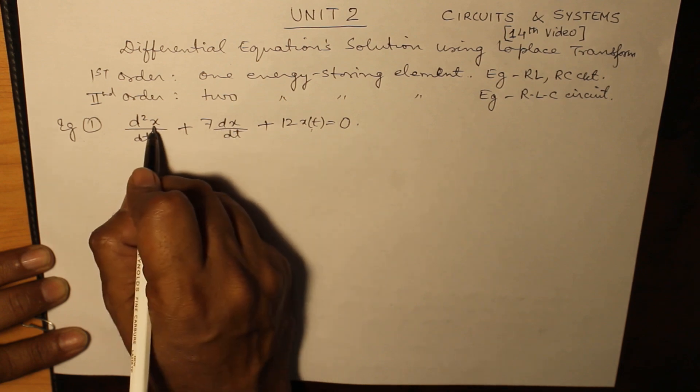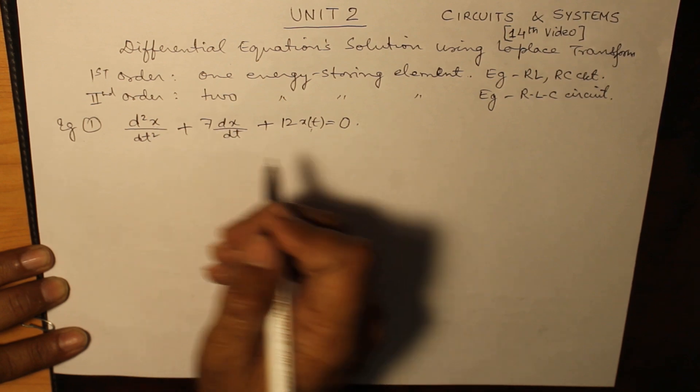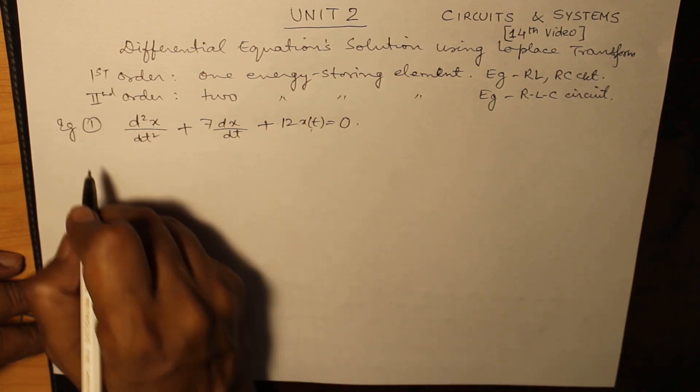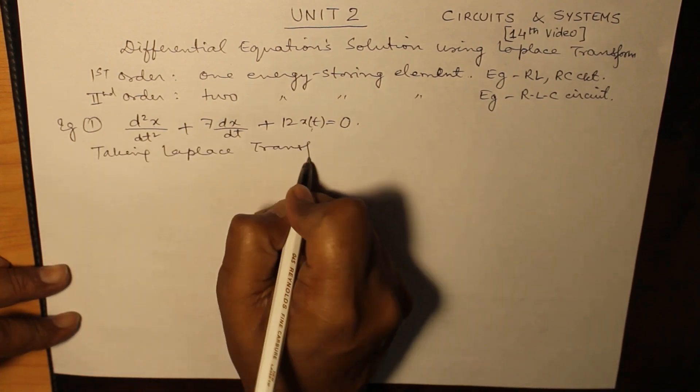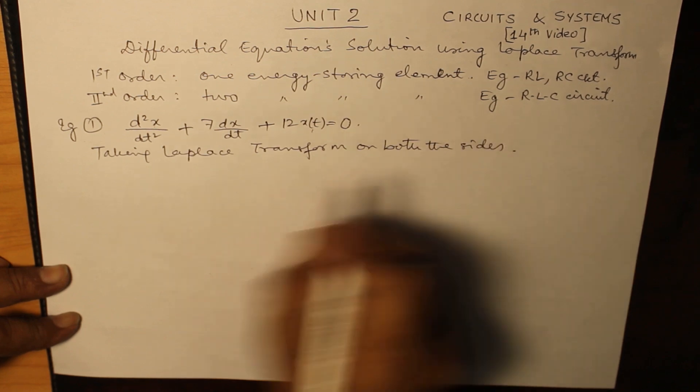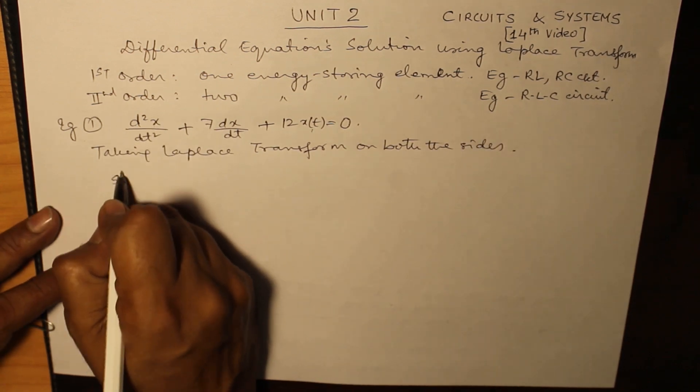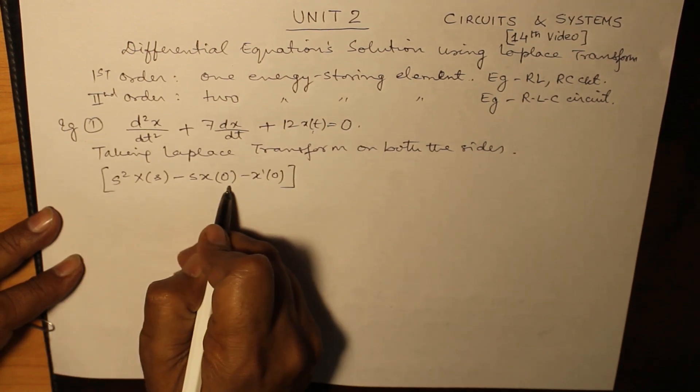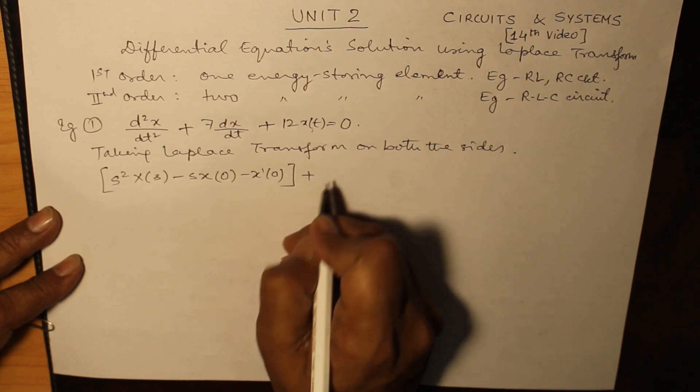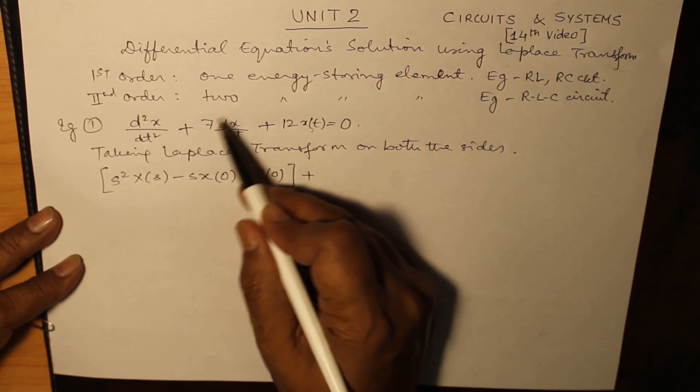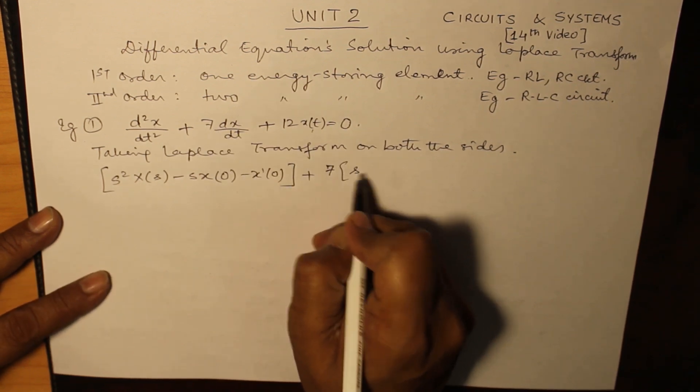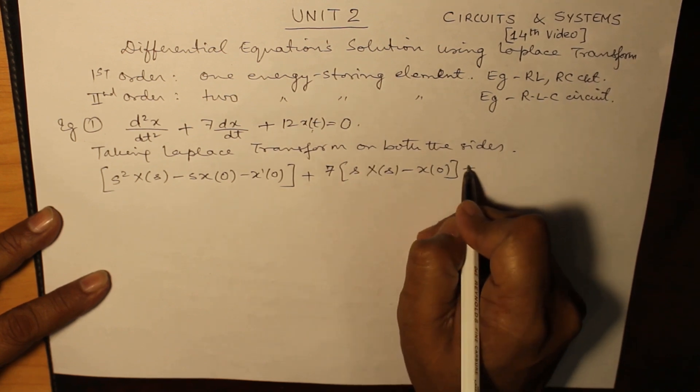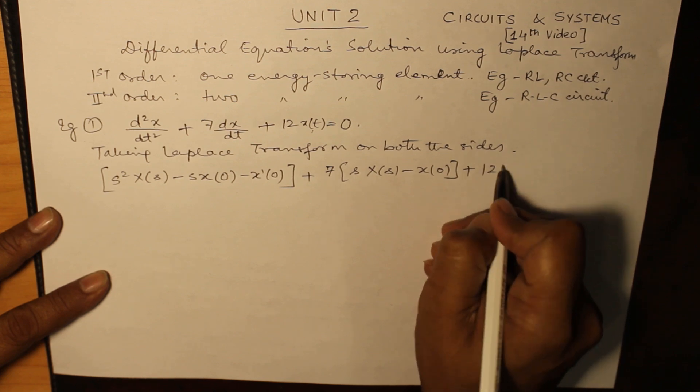The equation goes d²x/dt² + 7dx/dt + 12x(t) = 0. All of these variables are functions of time but we have just written at one place. And we will be taking the Laplace transform on both sides. Laplace transform of d²x/dt² is s²X(s) - sx(0) - x'(0). Laplace transform of 7dx/dt is 7[sX(s) - x(0)] and the Laplace transform of 12x(t) is 12X(s).